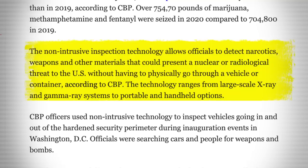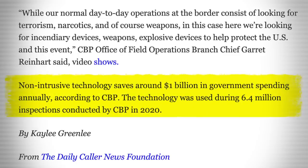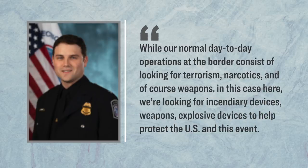The technology ranges from large-scale x-ray and gamma-ray systems to portable and handheld options. According to this agency, using this non-intrusive technology saves them around $1 billion annually. Last year, they said they used this technology during 6.4 million inspections. While using this technology on people entering the U.S. is not so controversial, it's also now being used on American citizens within the country. For example, customs officers used this technology to inspect vehicles coming in and out of the hardened security perimeter during the inauguration events in Washington, D.C.